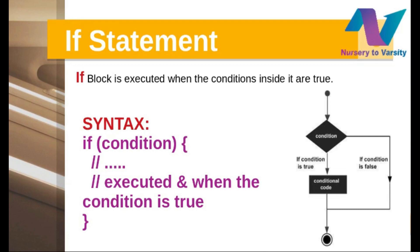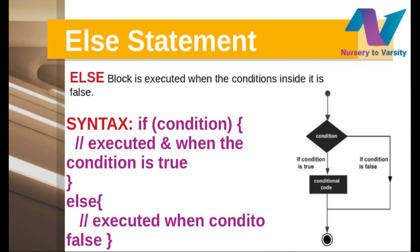Looking at the flowchart: if the condition is false, just go down vertically. If the condition is true, the conditional code executes and then the output is produced. The else block is only executed when the if condition is not true. If the condition you gave in the if block fails, then the else part will be executed and whatever statements are written in that else part will run.